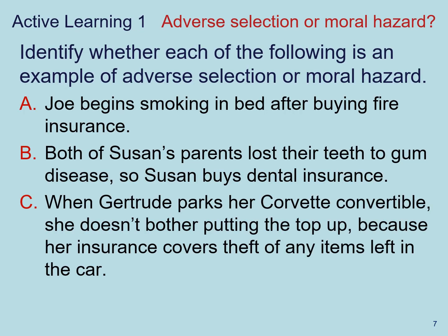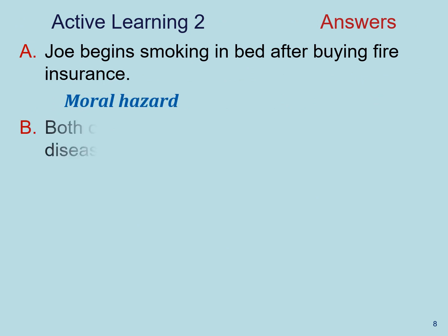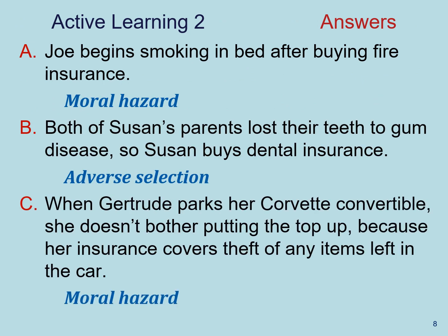Let's practice these two concepts of adverse selection and moral hazard with three scenarios. For scenario A, Joe begins smoking in bed after buying fire insurance. That is clearly a hidden action — Joe is an example of the problem of moral hazard.